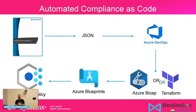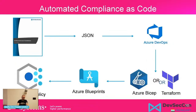Let's see how they all connect together. On the left side is the CIS Azure Foundation Benchmark. We create multiple JSON files for the policies we want to deploy to Azure. We use Azure DevOps as the deployment pipeline, and we use either Azure Bicep, Terraform, or another infrastructure tool to deploy those to Azure Blueprints. After deploying to Azure Blueprints, the service assigns that set of policies to your subscription or resource group via Azure Policy.